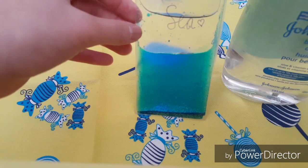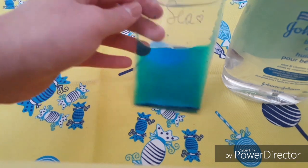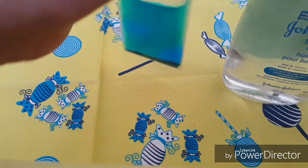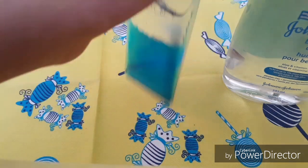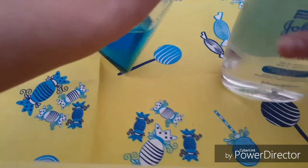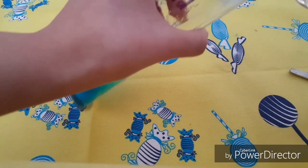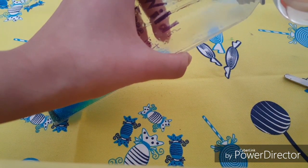So just pour that in really slowly so you don't mess up anything. And as you can see the oil doesn't mix with the glue and water mixture which is really nice. And if you want you can add some more.